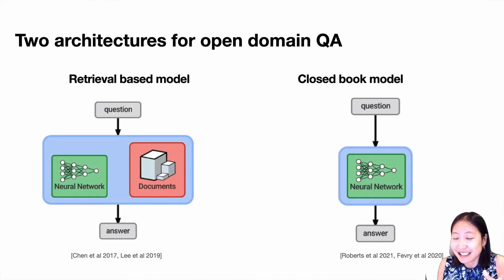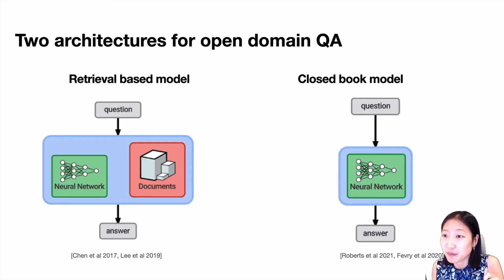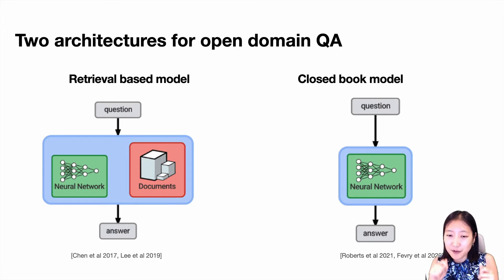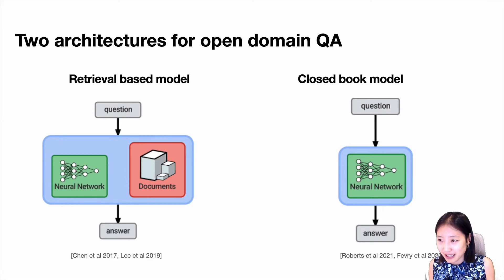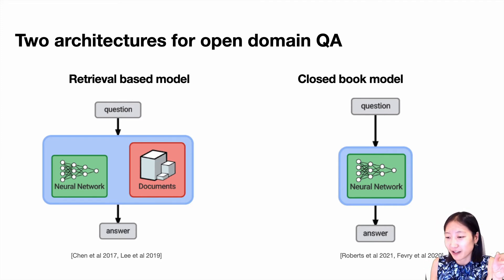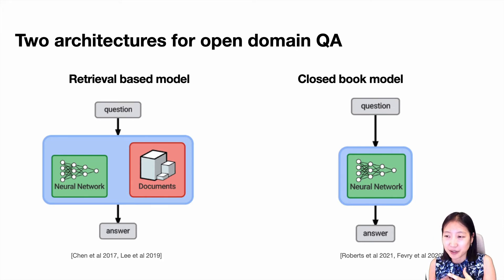We designed this as a memory constraint because of two interesting architectures for open domain QA. One is a retrieval-based model — given a question, the neural network retrieves relevant documents and selects the answer from them. The other is a closed-book approach, which doesn't use any document at inference time, but during training this giant neural network memorizes the documents and at test time simply outputs an answer. There are also hybrid approaches combining retrieval and closed-book answering.